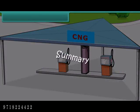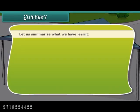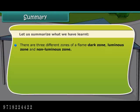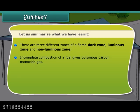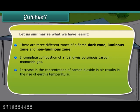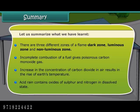Summary: There are three different zones of a flame — dark zone, luminous zone, and non-luminous zone. Incomplete combustion of a fuel gives poisonous carbon monoxide gas. An increase in the concentration of carbon dioxide in air results in the rise of Earth's temperature. Acid rain contains oxides of sulfur and nitrogen in dissolved state.